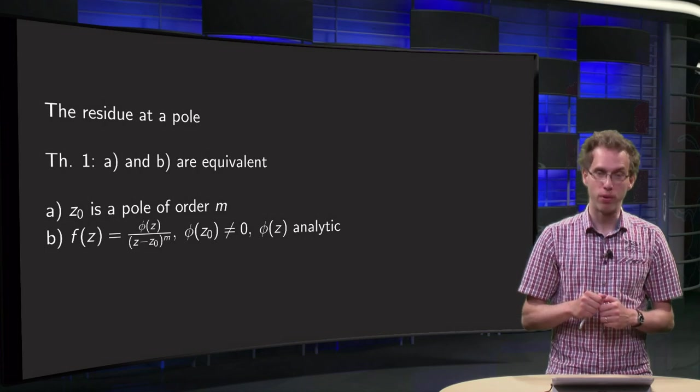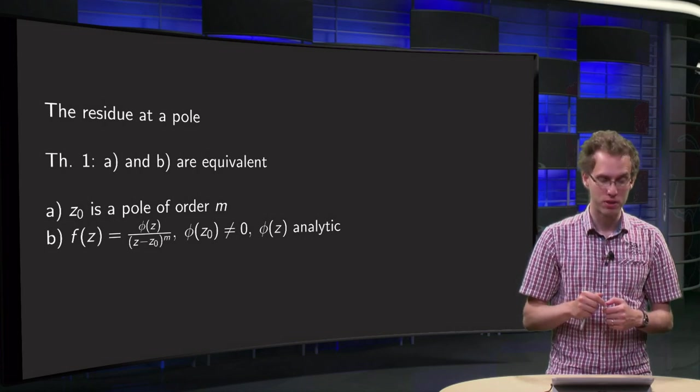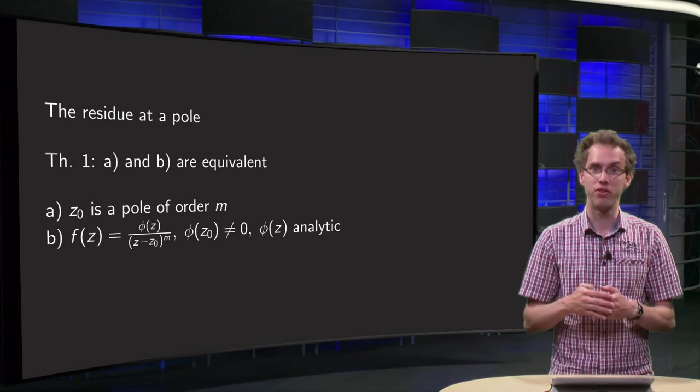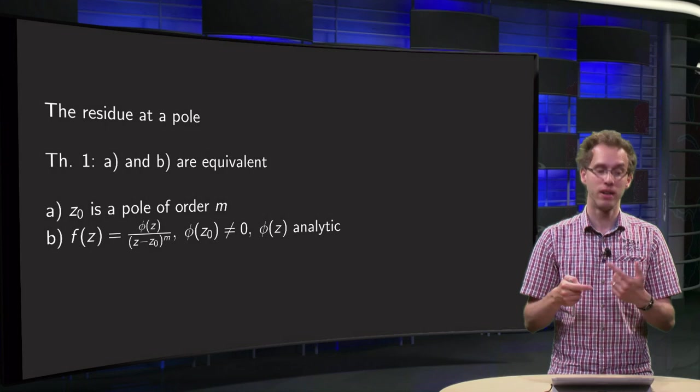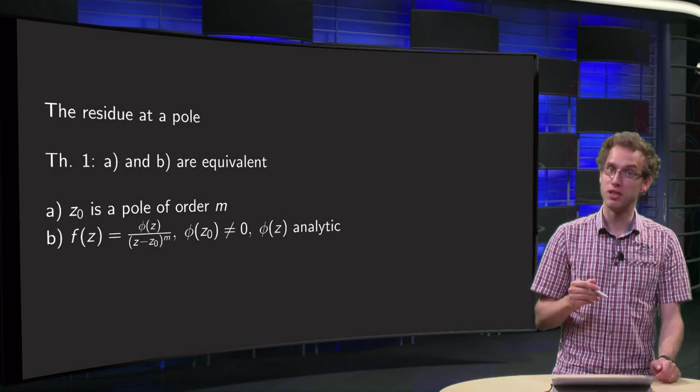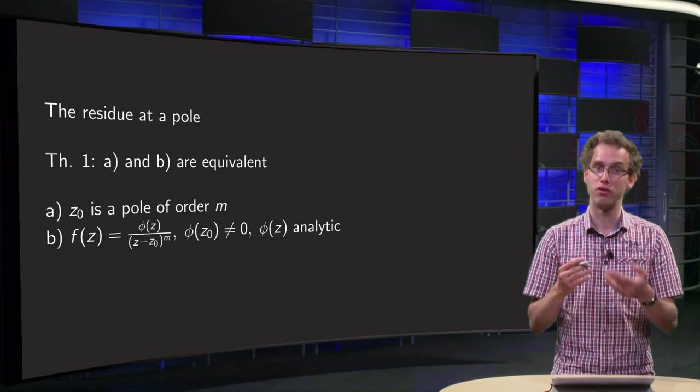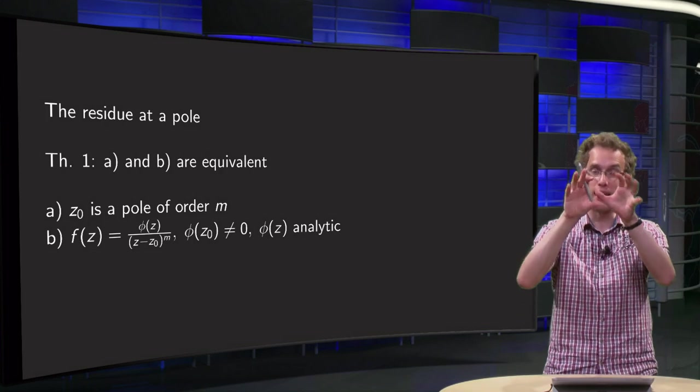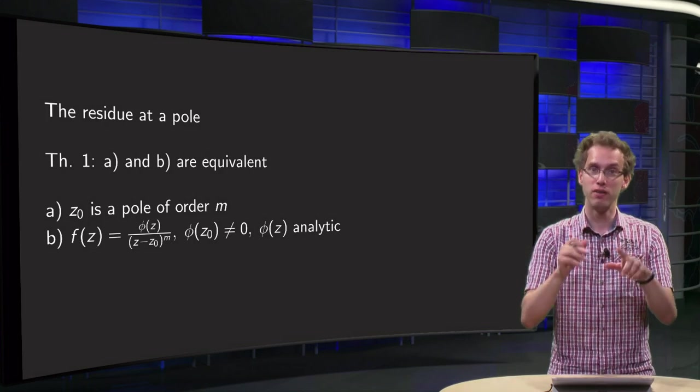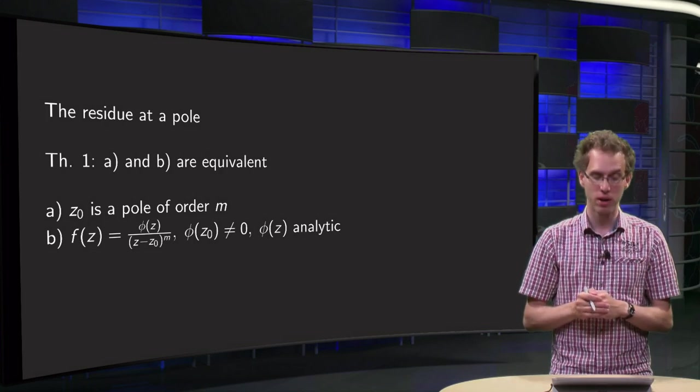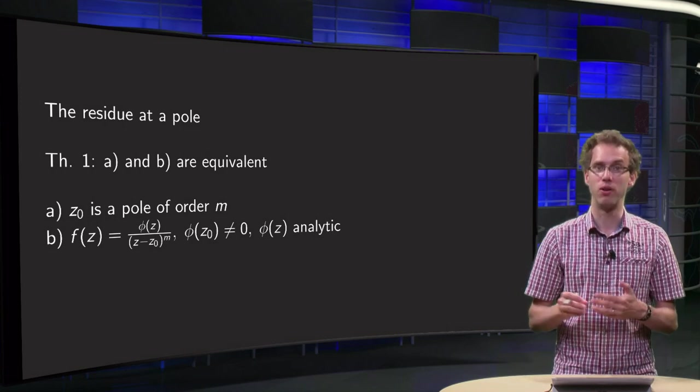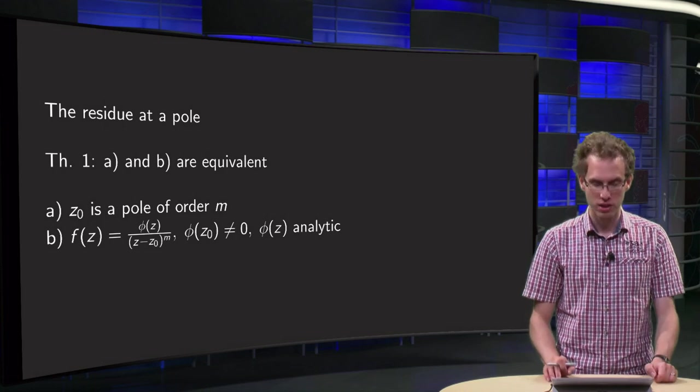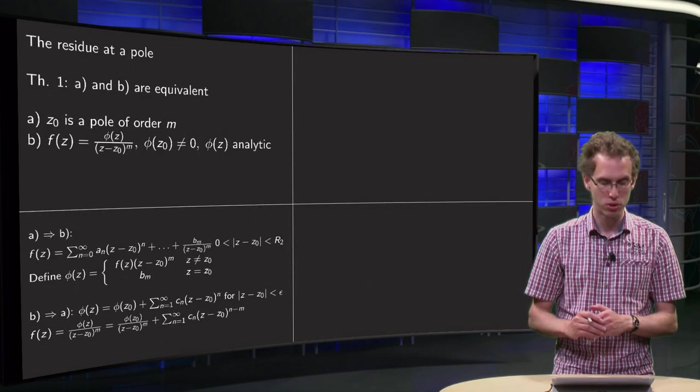We have a theorem which says A and B are equivalent. A says z0 is a pole of order m, and B says that your function f(z) is of the form some analytic function φ(z) divided by (z-z0)^m, where φ(z0) is not equal to 0. Maybe kind of obvious to you, but let's take a fast look why this is true.